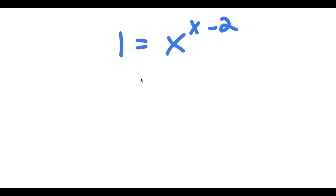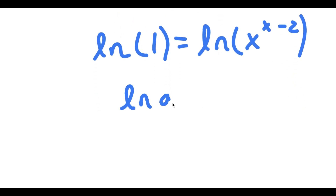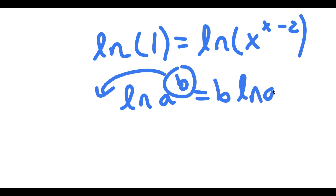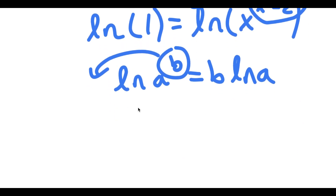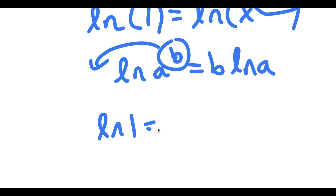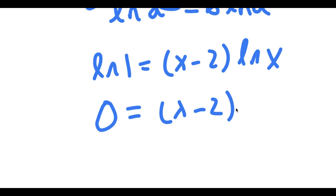Now if I take the ln of both sides, I get ln of 1 is equal to ln of x to the power of x minus 2. If I have something in the form ln of a to the power of b, I can move the exponent b to the front, so this equals b times ln of a. So I can move x minus 2 to the front: ln of 1 is equal to x minus 2 times ln of x. And ln of 1 is equal to 0, so I have 0 is equal to x minus 2 times ln of x.